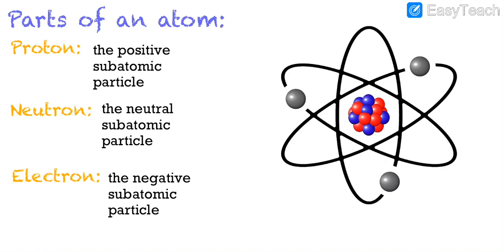An atom, which as defined in the last slide, is the basic unit of measure in chemistry, and it is made out of three parts. First, we have the proton, which is the positive subatomic particle. Next, we have the neutron, which is the neutral subatomic particle. Lastly, we have the electron, which is the negative subatomic particle.